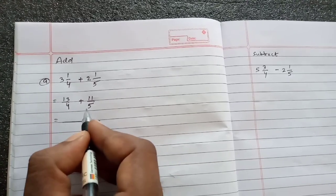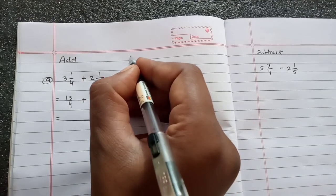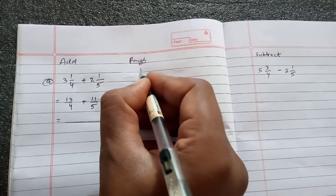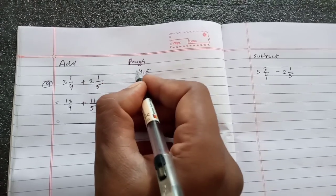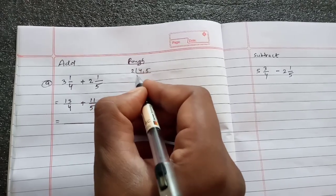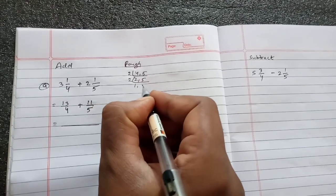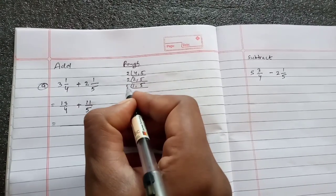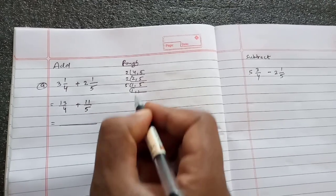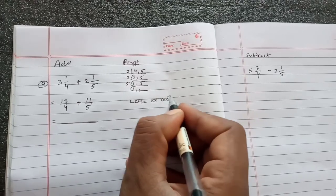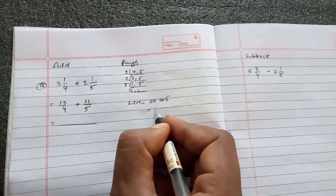Then take the LCM of 4 and 5. What is the LCM of 4 and 5? If we want to do rough, 2 times 2 is 4, then 5. So the LCM will be 2 into 2 into 5. 2 times 2 is 4, 4 times 5 is 20. So LCM is 20.